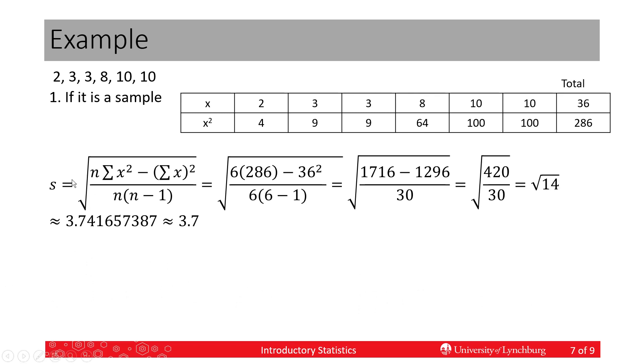Here we had zero decimal places in the data, so now we're going to use one decimal place in the answer. That's 3.7. This is the answer you would report, 3.7.